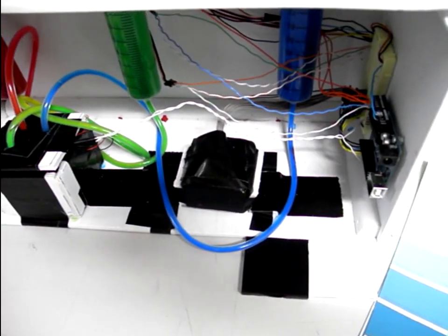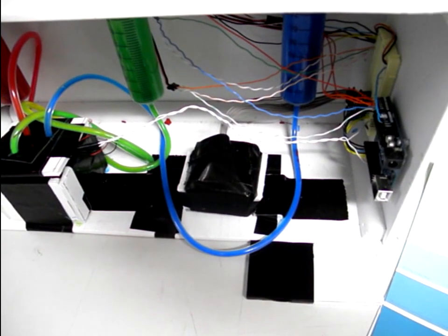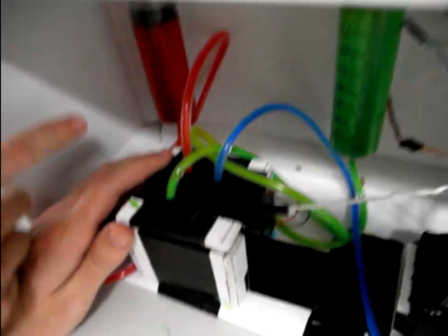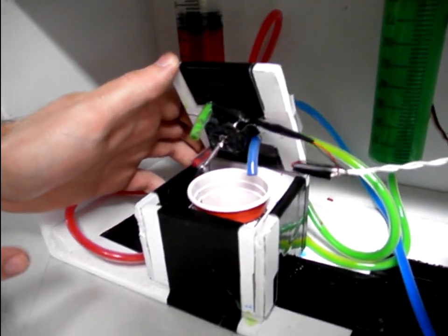After it senses the sample, it can tell how much red, blue, and green is in that sample. Then, from there, it can determine how much of red, green, and blue it needs to bring from the appropriate red, green, and blue syringes and put into the mixing site here.